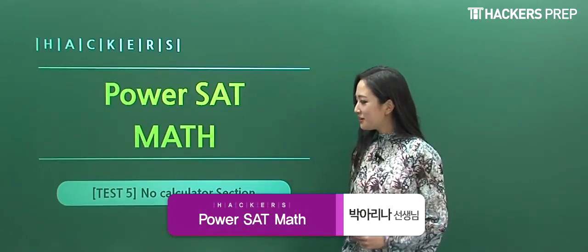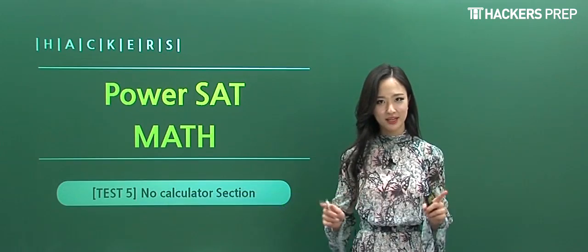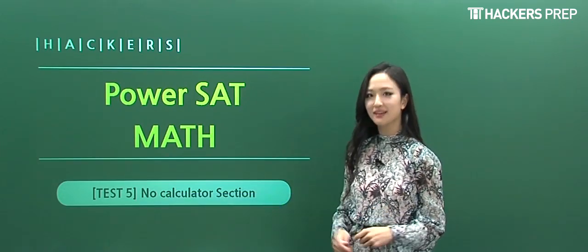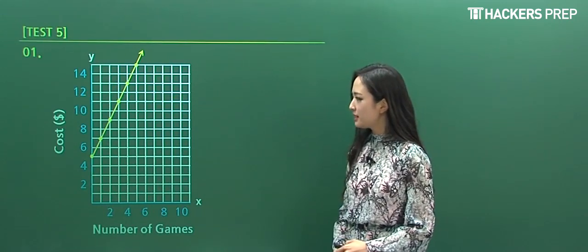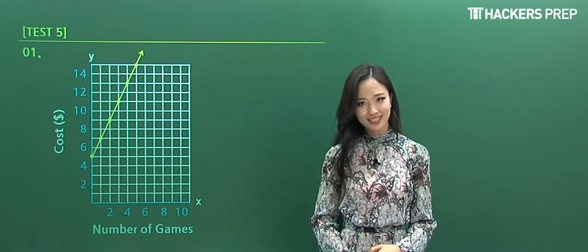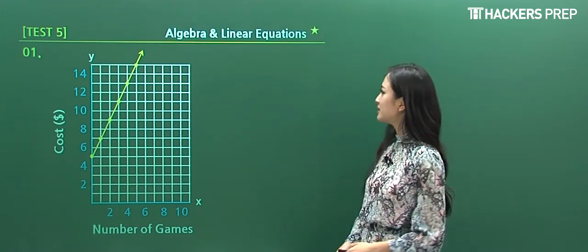Welcome back. Today we'll be going over the no-calculator section of Test 5. You guys all remember this, right? Twenty questions. Let's begin. Question number one: a basic graph is given. Always read your x and y axes. What does the x-axis represent? The number of games. And the y-axis, the cost.